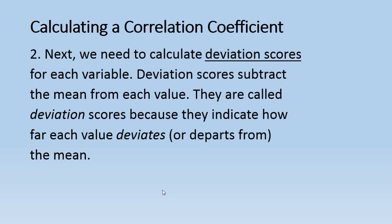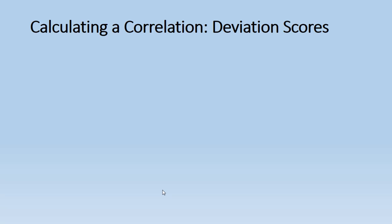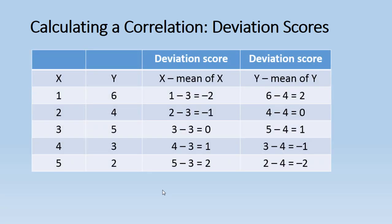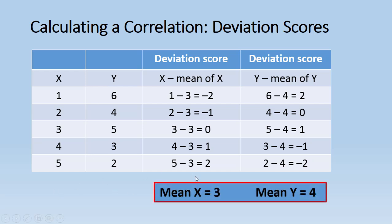Next we need to calculate what are known as deviation scores for each variable. Deviation scores subtract the mean from each variable. They're called deviation scores because they indicate how far each value deviates or departs from the mean. So let's take a look at that now. There's a lot of information here on the screen, but let me walk you through it. It's really not that bad.